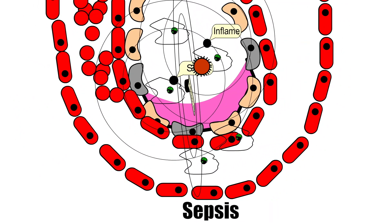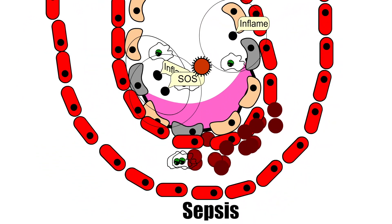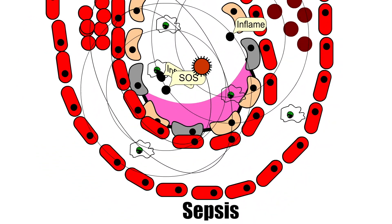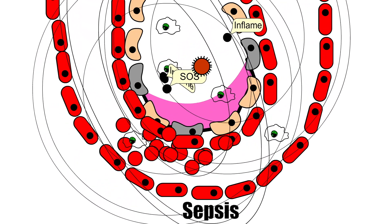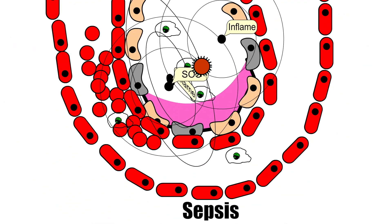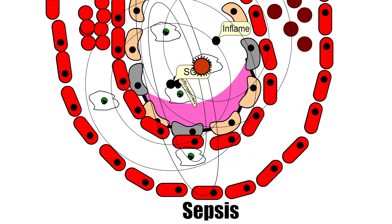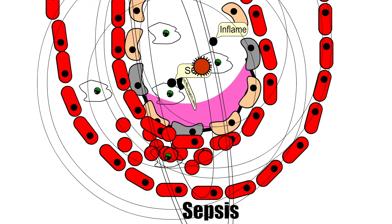Sepsis is also another potentially life-threatening condition caused by the body's response to an infection. The body normally releases chemicals into the bloodstream to fight an infection. Sepsis occurs when the body's response to these chemicals is out of balance, triggering changes that can damage multiple organ systems.